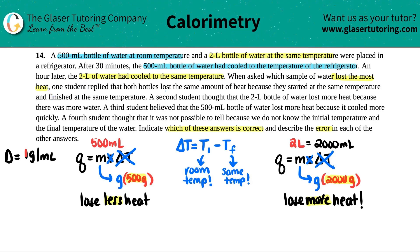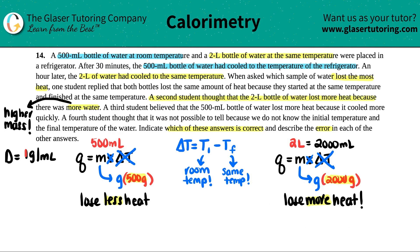The second student thought that the 2 liter bottle of water lost more heat because there was more water. More water means a higher mass, and this is the correct answer. The second student is correct — the 2 liter bottle lost more heat because there was more water, meaning a higher mass.